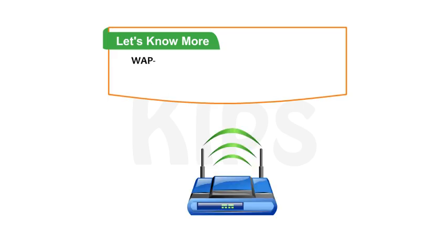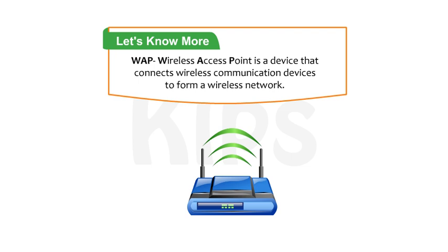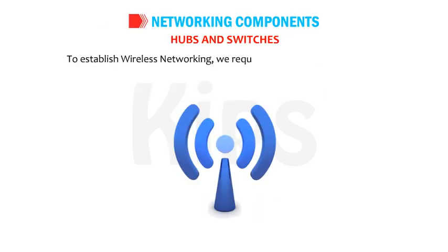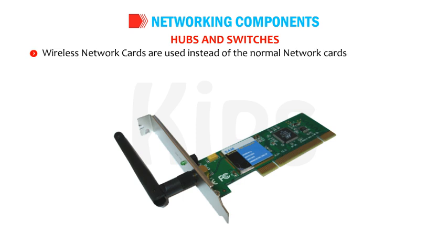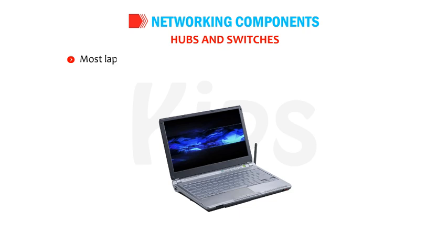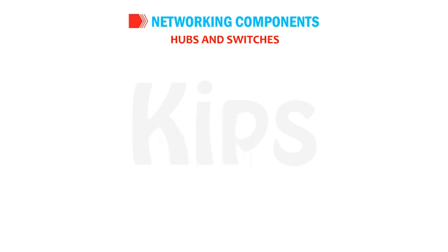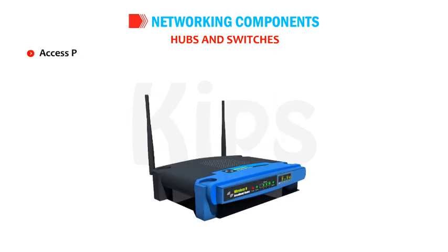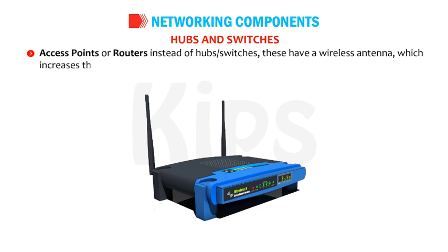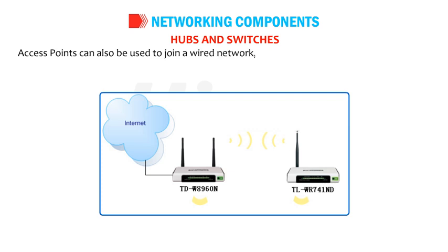WAP (Wireless Access Point) is a device that connects wireless communication devices to form a wireless network. To establish wireless networking, we require wireless network cards instead of normal network cards; most laptop computers come with inbuilt wireless network cards. Radio signals are used for transferring data, so Ethernet cable is not required. Access points or routers are used instead of hubs or switches; they have a wireless antenna which increases the communication range of the radio signals. Access points can also be used to join a wired network, making it a combination of wired and wireless network.